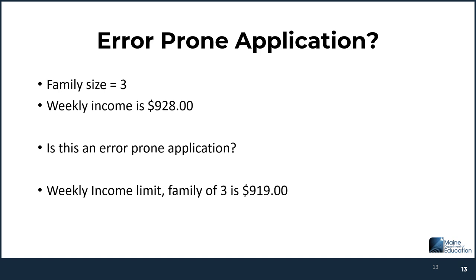Here's another one: family size of three, stated weekly income is $9.28. This would not be considered error prone because $9.19 is the reduced guideline — it's over by only $9, but it's over. It's a denied application, and therefore this application is not subject to the verification process.